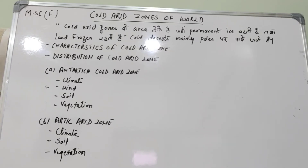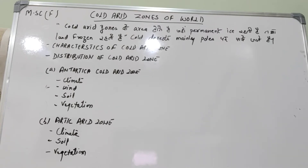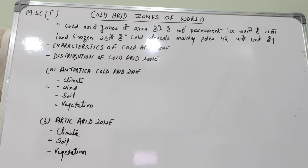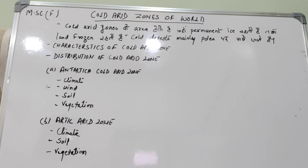Hello students of MSV final class. Here I am Dr. Raksha Mishra. Today I will take the topic of cold arid zones of the world. In the last lecture I explained about the hot desert types of deserts. Now today we will take the cold arid zones of the world — what they are, their characters, and their distribution.